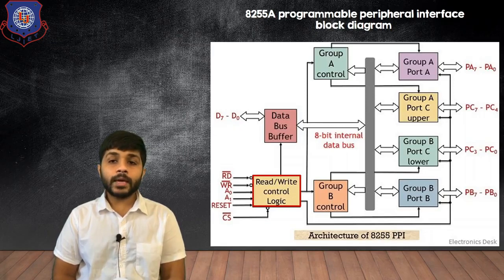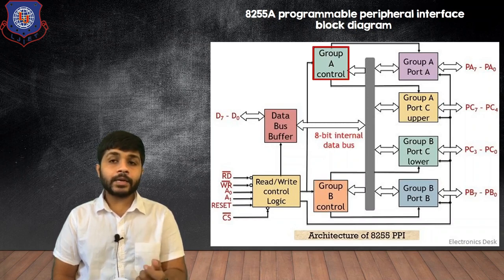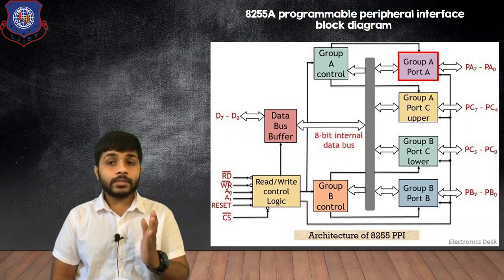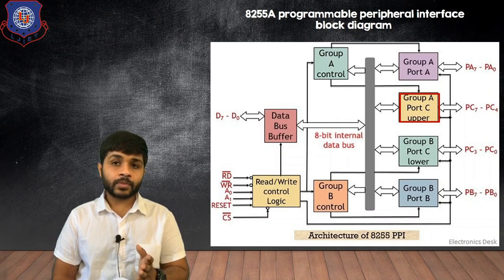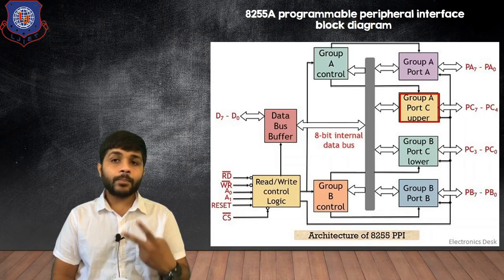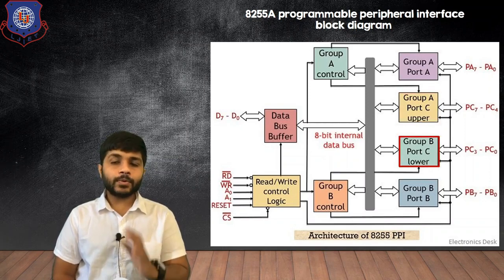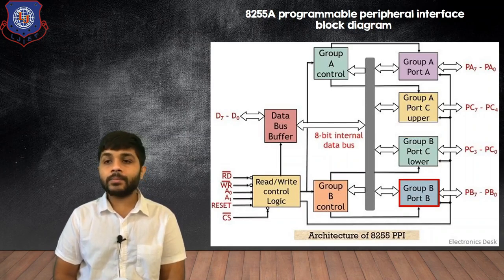The next block consists of Group A and Group B. Group B is connected to Port C lower and Port B. Group A is connected to Port A and Port C upper. Port A is 8 bits (PA0 to PA7). Port C upper is 4 bits (PC4 to PC7), so under Group A there are two ports: Port A and Port C upper. Under Group B there are also two ports: Port C lower (PC0 to PC3), which is 4 bits, and Port B (PB0 to PB7), which is 8 bits.